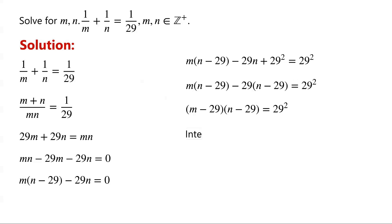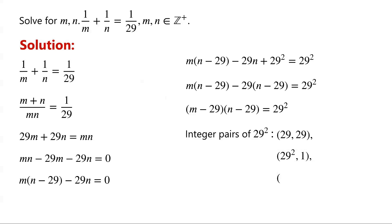Next, we need to find all pairs of positive integers such that their product is equal to 29 squared. We know that 29 is a prime number, so the integer pairs of 29 squared are: (29, 29), or (29 squared, 1), or (1, 29 squared).